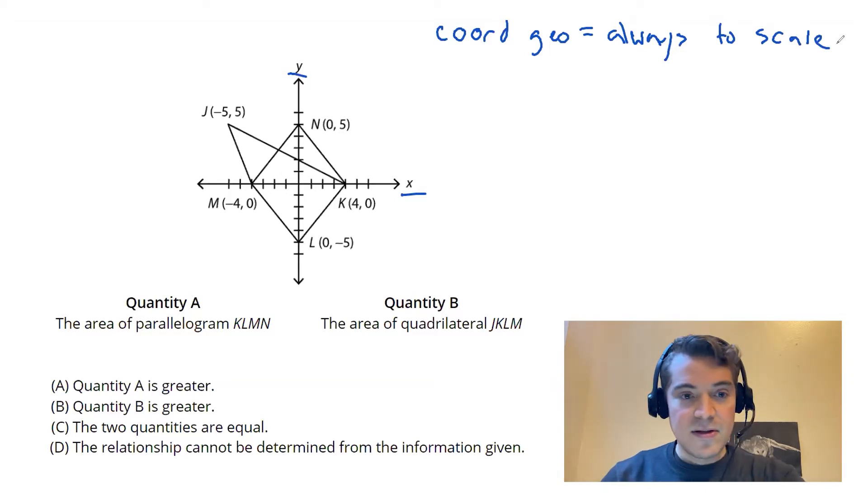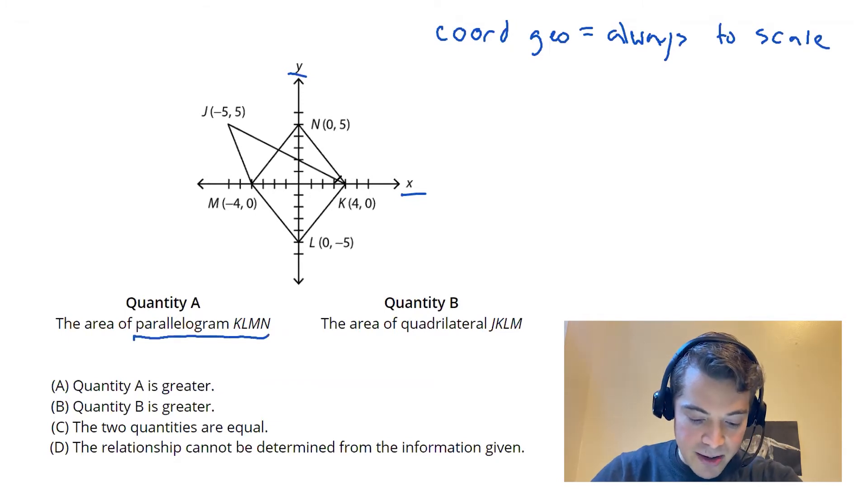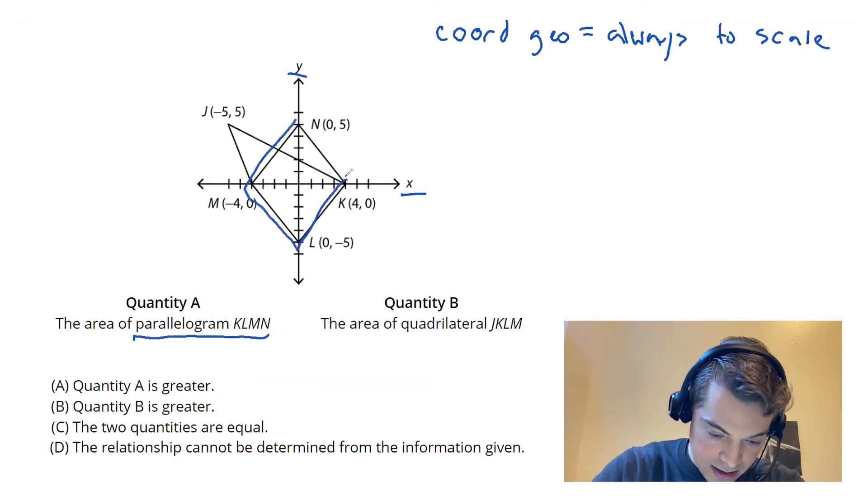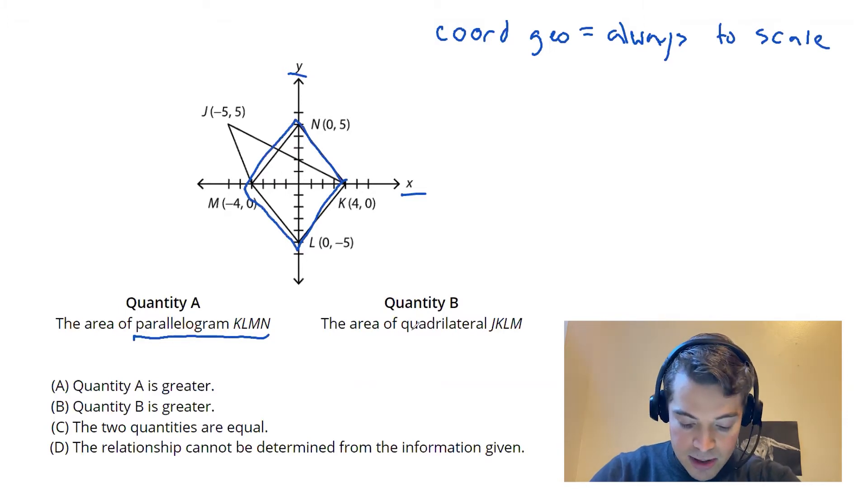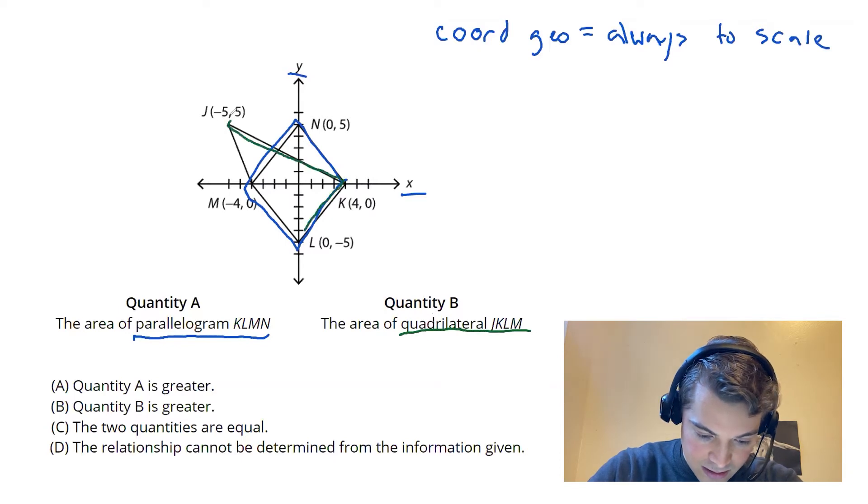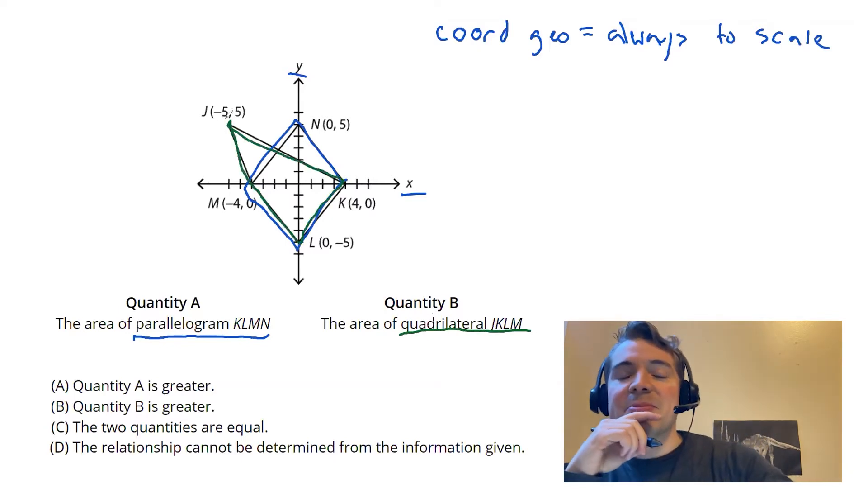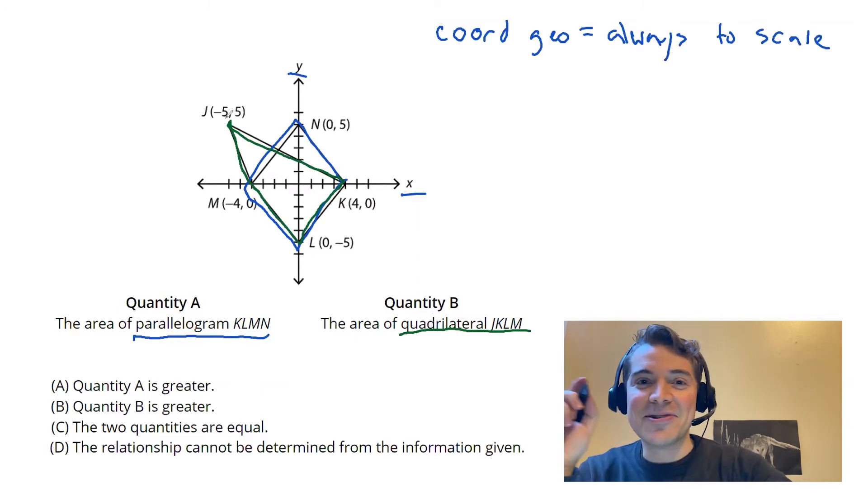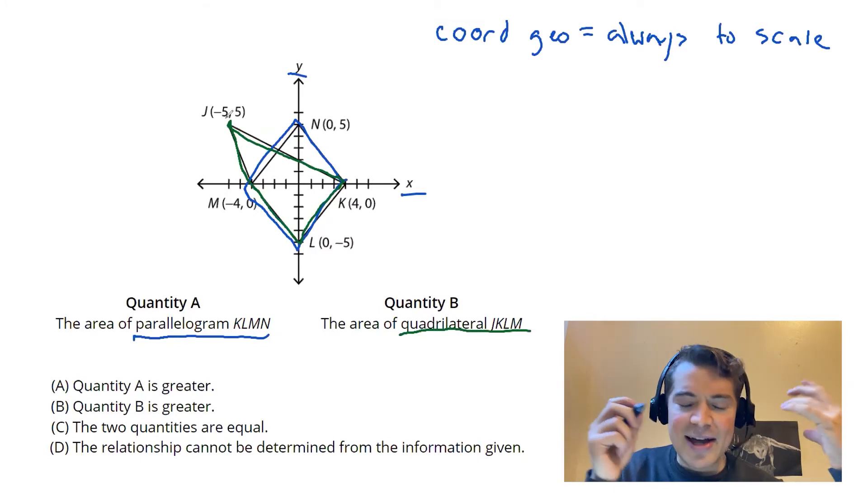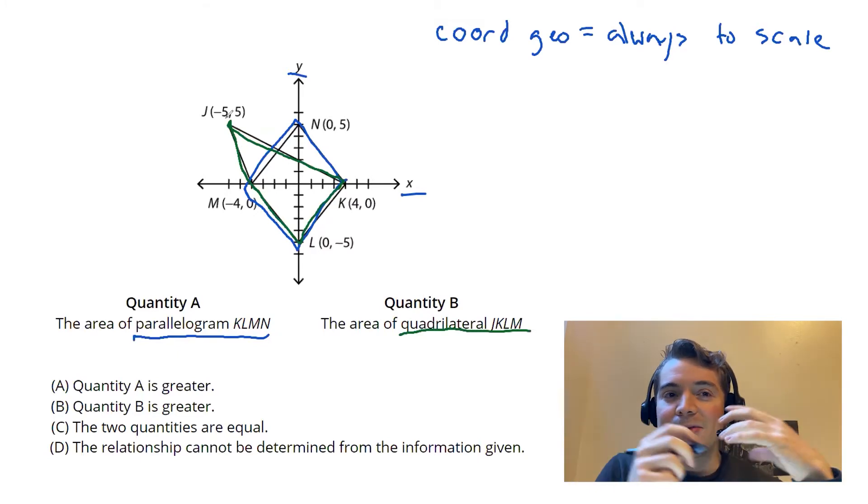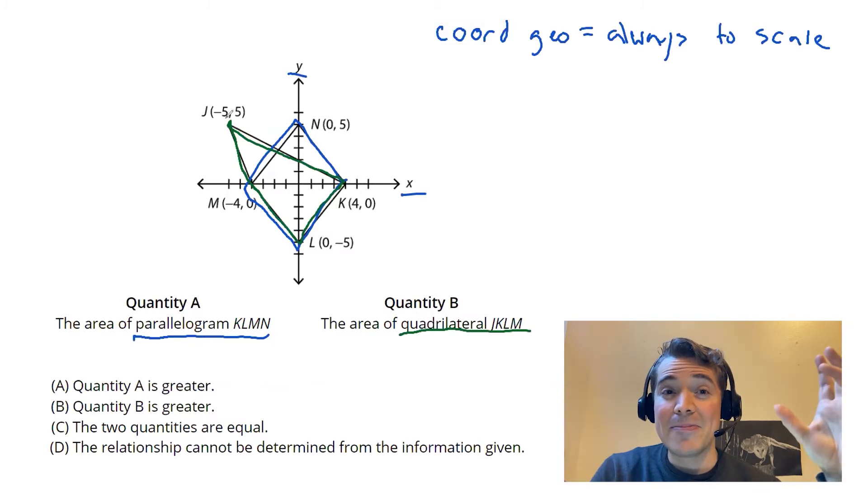In terms of the quantities, for A down here I've got this kind of intimidating shape parallelogram J-K-L-M-N, and for quantity B I've got this quadrilateral J-K-L-M. Looking at those shapes themselves, it is a little bit intimidating. I might not know how to calculate the area of a funny looking quadrilateral. But what we have to realize is that the people that write these questions are really masters of obfuscating a simple question. So rather than thinking of these as a parallelogram and a quadrilateral...